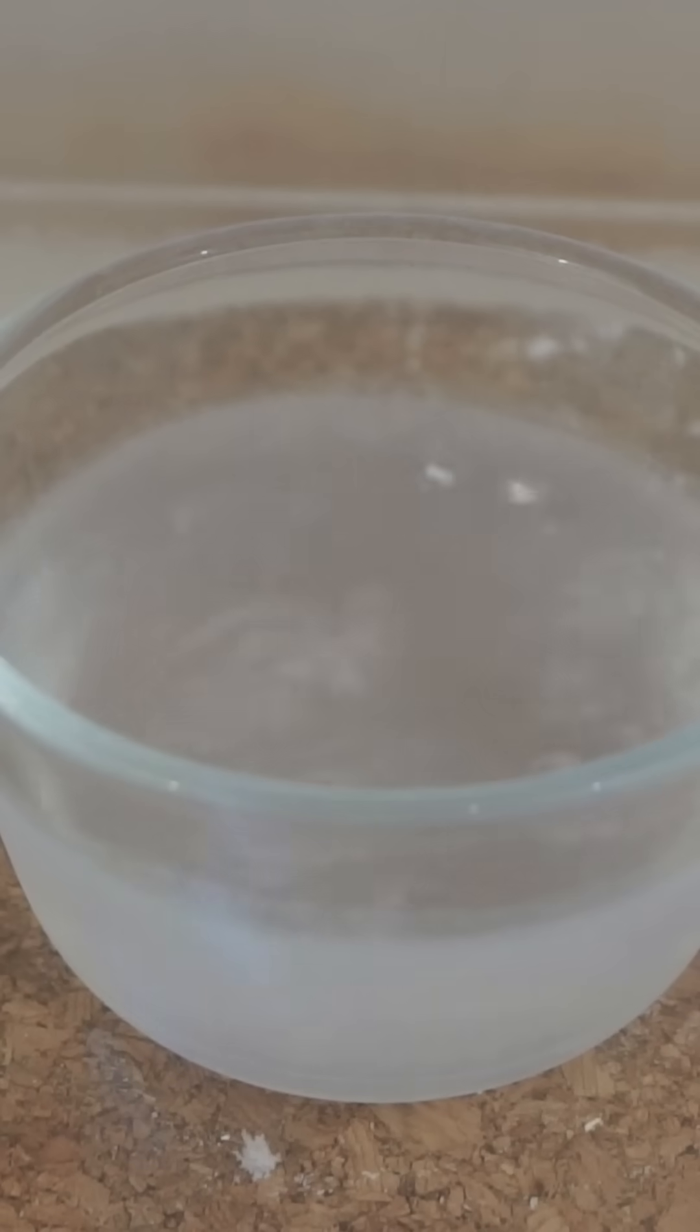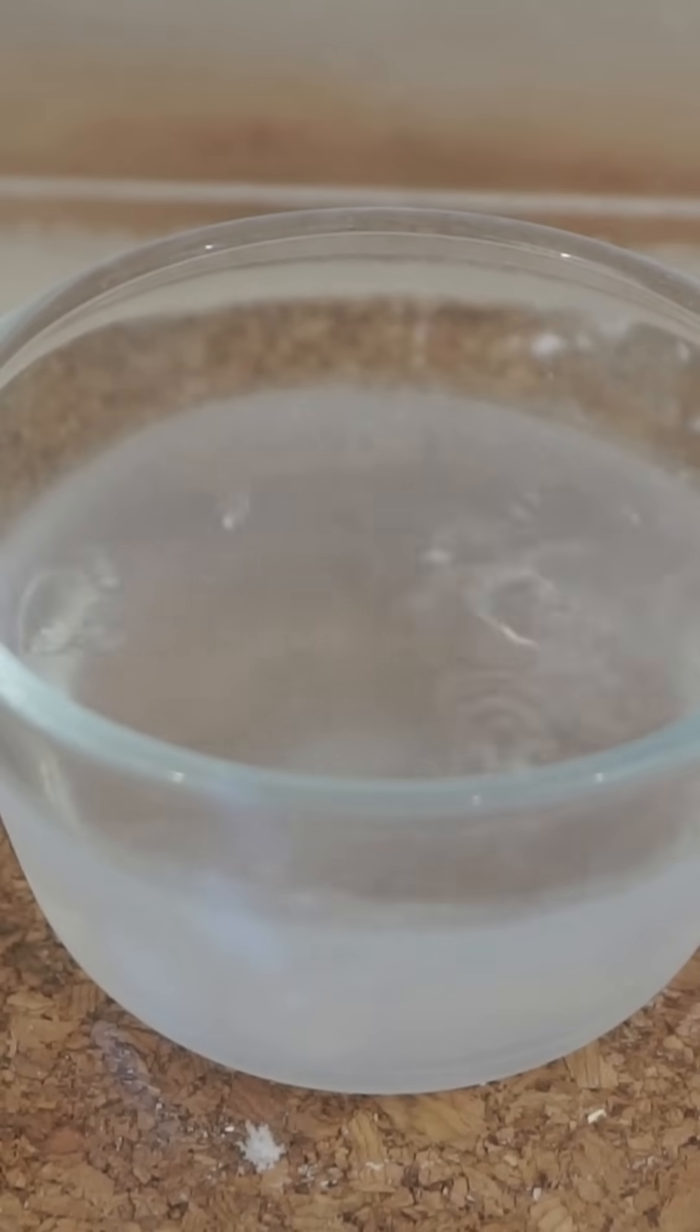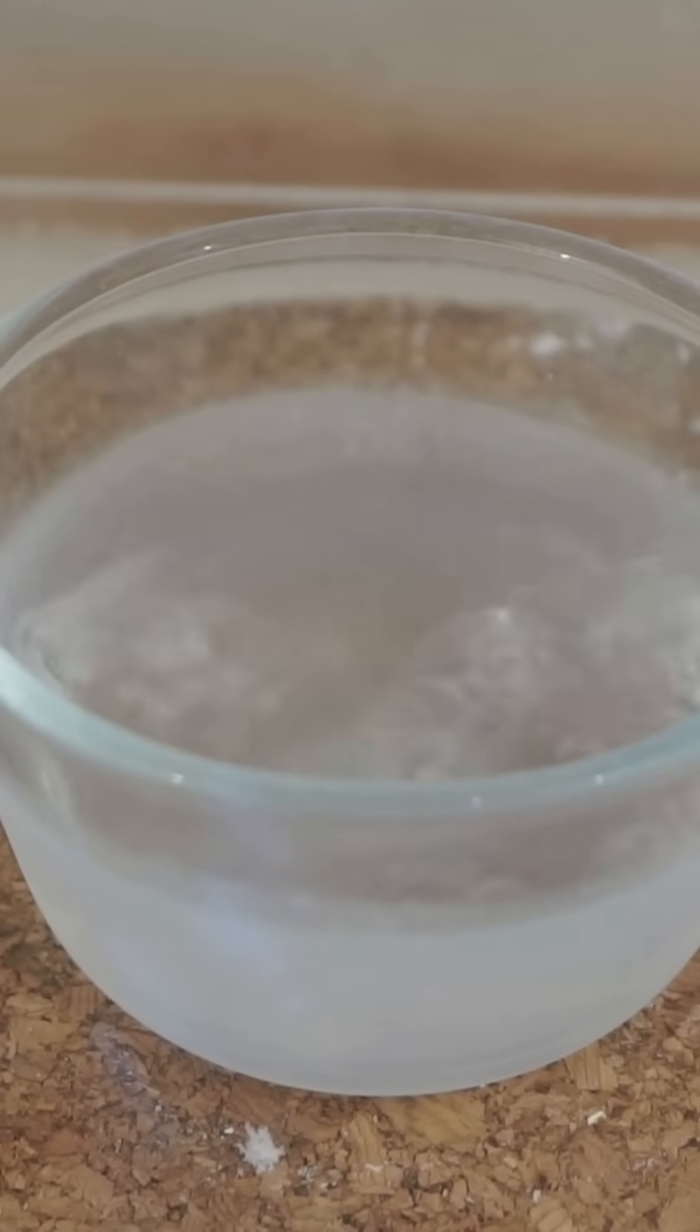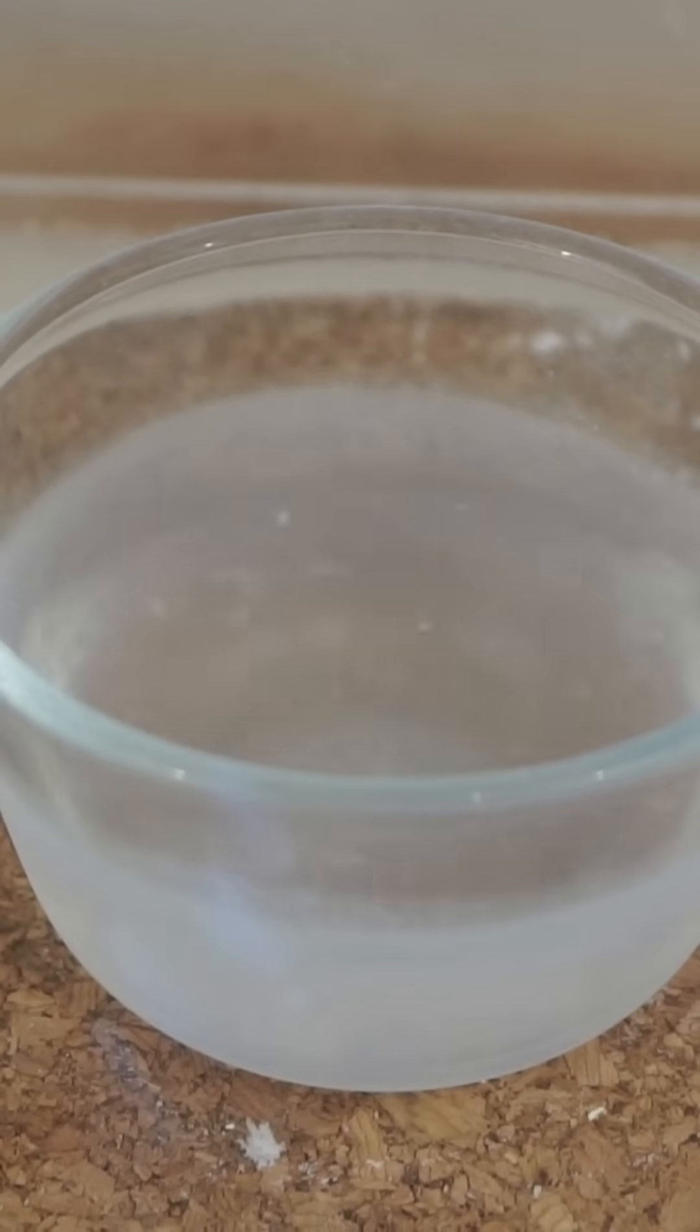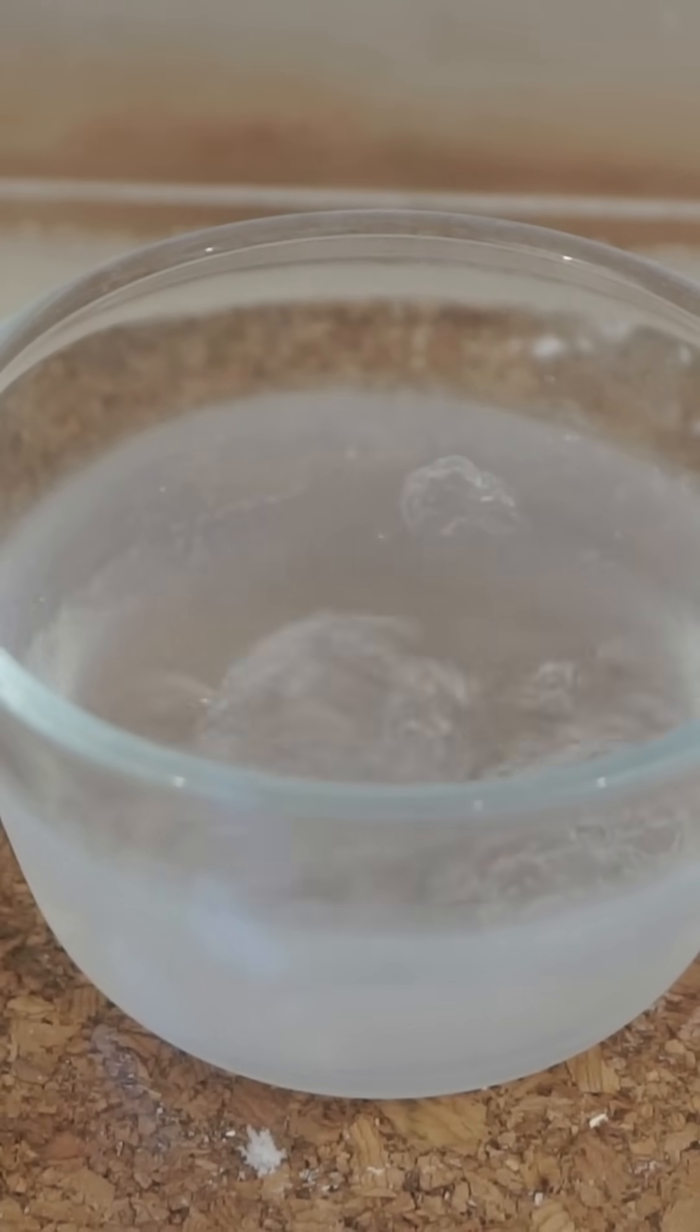Liquid nitrogen is normally at 77 degrees above absolute zero. But if you put it in a vacuum chamber, it makes it boil more rapidly, and so it evaporates faster than it normally would, and that evaporation cools it down even more. So you can get it down to temperatures only 63 degrees above absolute zero. And at that point, it becomes solid nitrogen.